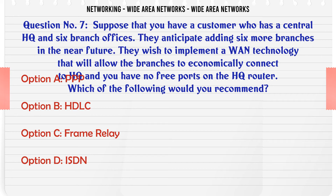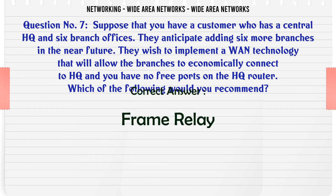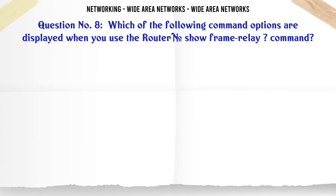Suppose you have a customer who has a central HQ and 6 branch offices. They anticipate adding 6 more branches in the near future. They wish to implement a WAN technology that will allow the branches to economically connect to HQ, and you have no free ports on the HQ router. Which of the following would you recommend? A. PPP. B. HDLC. C. Frame Relay. D. ISDN. The correct answer is C: Frame Relay.